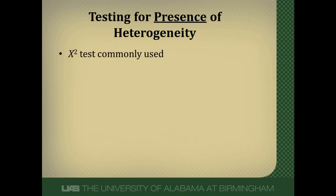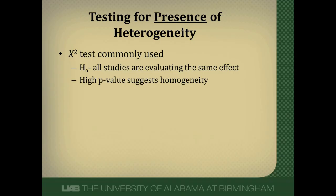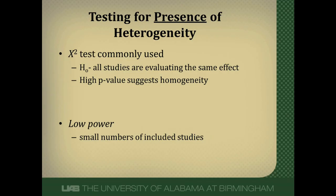The most commonly used test for heterogeneity is a chi-square test. The null hypothesis is that all studies are evaluating the same effect — that they're basically homogeneous. A high p-value, over 0.05 (and often authors use 0.1 as the cutoff), suggests homogeneity or lack of heterogeneity. However, the problem is these tests often have low power and can miss significant heterogeneity, because meta-analyses often include only 5 to 15 studies — very small numbers. So tests for the presence of heterogeneity are often not very useful.